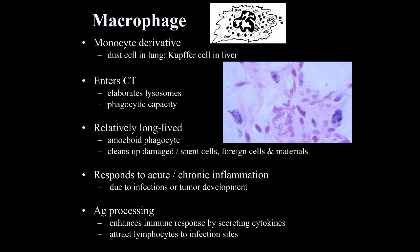Macrophages are amoeboid phagocytes, meaning they can move around in connective tissue. They function to clean up damaged cells, spent cells, foreign materials, and bacteria. Macrophages can respond to acute and chronic inflammation, respond to infections, and respond to tumor development. They are also considered antigen processing cells.